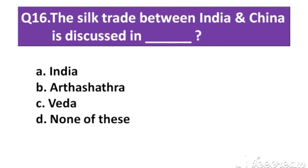Question number 16: The silk trade between India and China is discussed in which text? Option A: India. Option B: Arthashastra. Option C: Veda. Option D: Nannaptis.